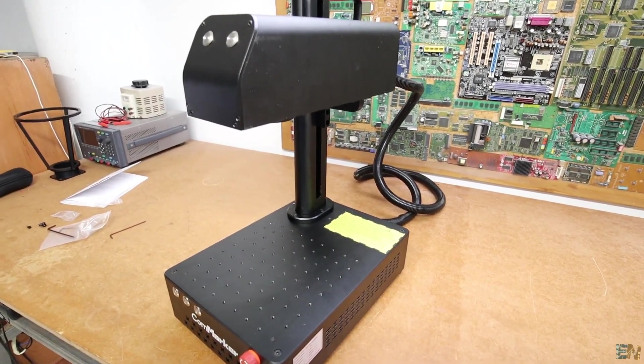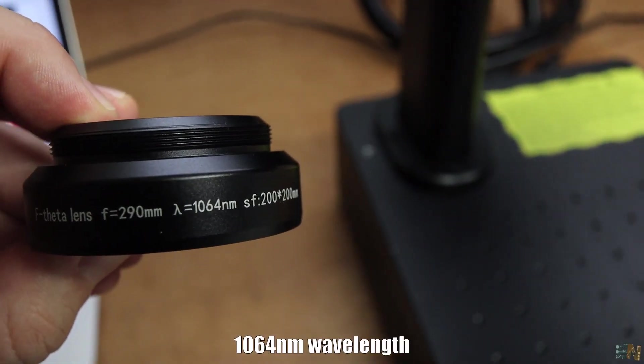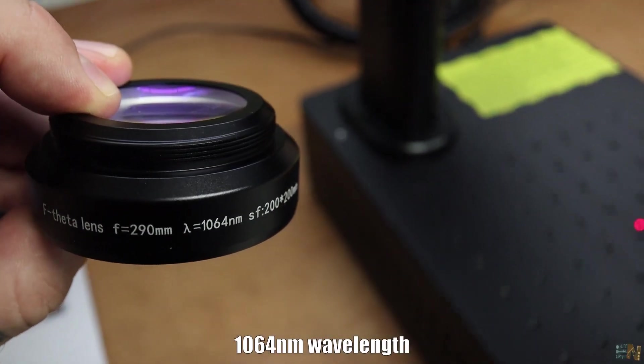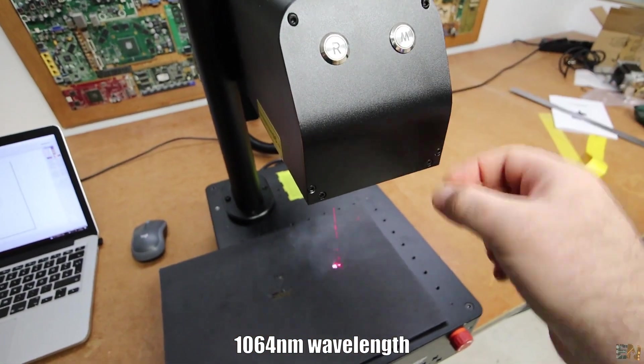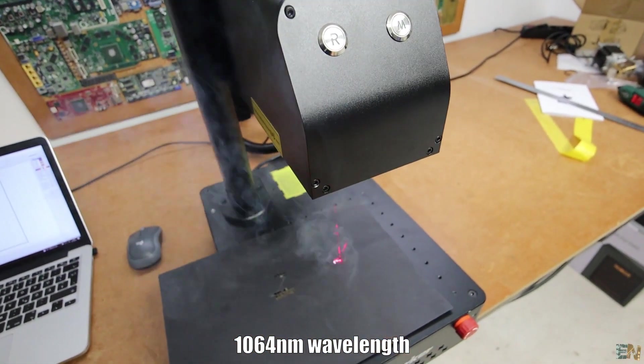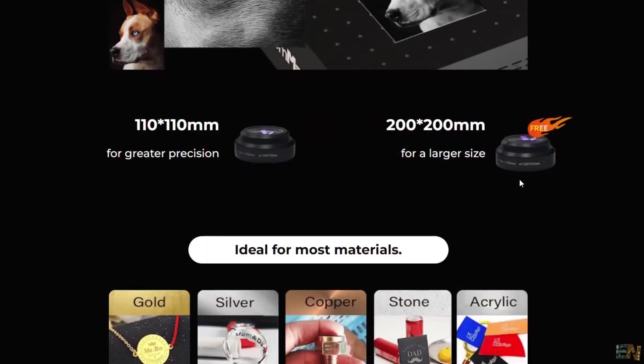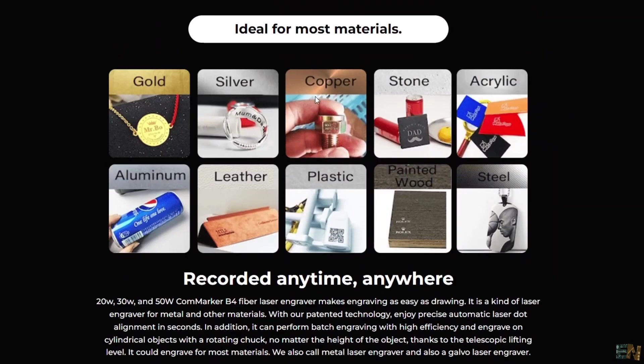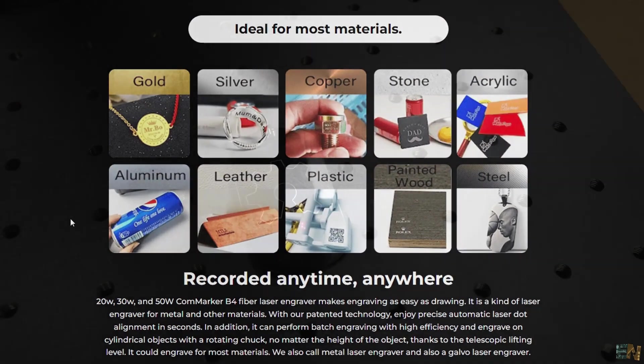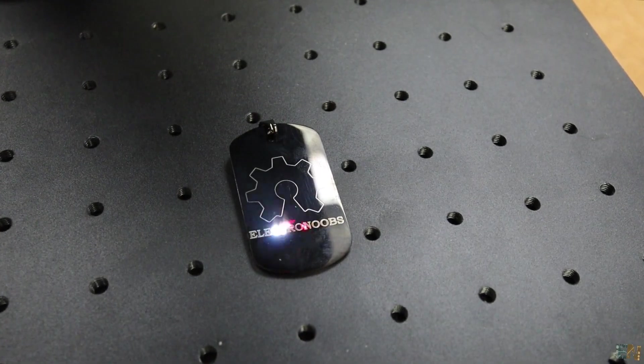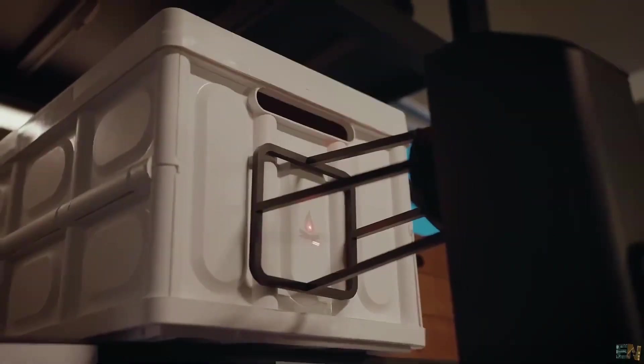Different from my previous diode laser CNC engravers, the wavelength of the B4 is 1064 nanometers, which is invisible to the naked eye. But it's perfect for engraving on metals such as stainless steel, silver or gold, copper or even aluminum. But don't worry, it could also work on plastic, stone, rubber, acrylic and even painted wood.